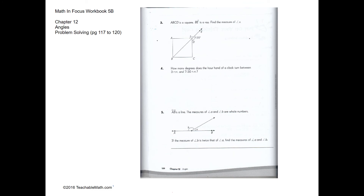Problem solving, Question 3. ABCD is a square, BE is a ray — find the measure of angle X. We know that the sum of angles at a point is 360 degrees. Therefore angle X would be 360 minus 90 minus 135 degrees, giving the answer.